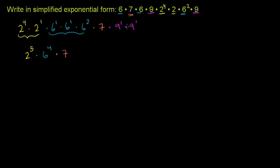And then we have a 9 times a 9, which is 9 squared. Or you could think about it as 9 to the 1st times 9 to the first, add the exponents, 9 squared. So times 9 squared.